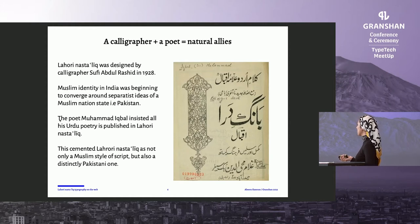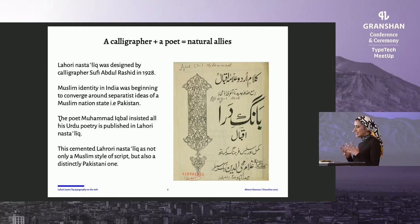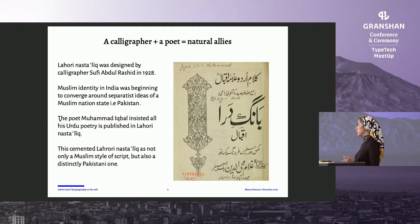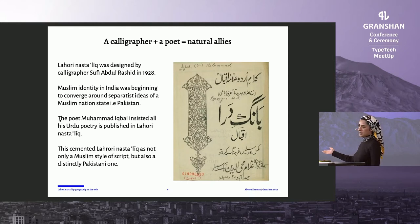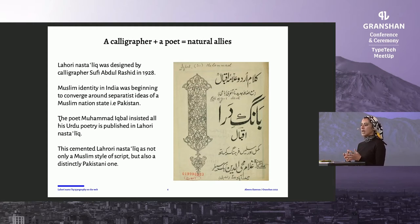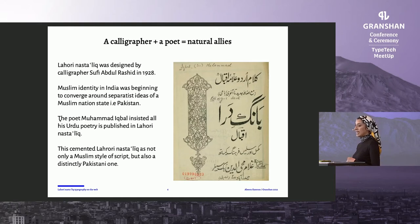This is quite an interesting story: Lahori Nastaliq was designed by a calligrapher named Abdul Rashid in 1928 in pre-partition India, just when Muslim identity was being formed around ideas of a separate Muslim nation state, and political identity was being formed in opposition to Hindu identity. Here you can see a cover of a poetry anthology by Pakistan's national poet, Muhammad Iqbal. He saw the calligrapher design the script and immediately understood the political power of having a script style that could be distinctly for that political period — Muslims advocating for a Muslim nation state — and he declared he would stop writing poetry if the calligraphers did not publish his poetry in that particular style.